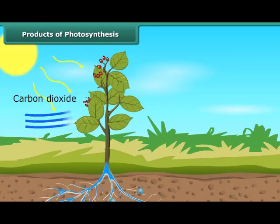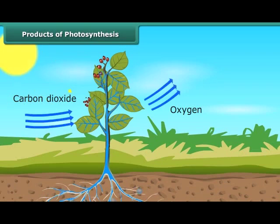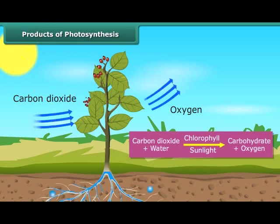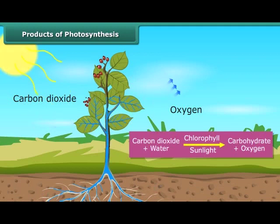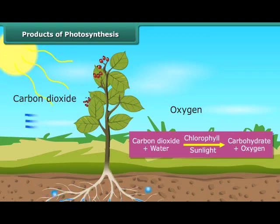The carbohydrate is ultimately converted into starch, which gets stored in different parts of the plant. Therefore, the first food product formed during photosynthesis is starch. Starch is also an example of a carbohydrate. In this process, oxygen is also released. The process of photosynthesis can be represented as: carbon dioxide + water, in the presence of chlorophyll and sunlight, gives carbohydrate + oxygen.